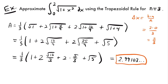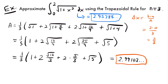So our approximate value for the area under this function from 0 to 2 is about 2.99103. To find how good this approximation is, you'd need to evaluate the definite integral. At this point in calculus you're not yet familiar with the method needed, so: using a more advanced technique, the definite integral equals approximately 2.95788. As you can see, the approximation is pretty close to the actual area. That's all for this video — if you have questions, leave them in the comments, and I'll see you next time.